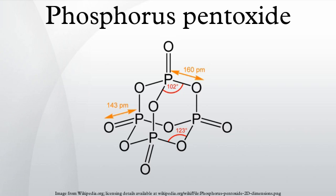Hazards. Phosphorus pentoxide is not flammable. It reacts vigorously with water and water-containing substances like wood or cotton, liberating much heat and may even cause fire. It is corrosive to metal and is very irritating. It may cause severe burns to the eye, skin, mucous membrane, and respiratory tract, even at concentrations as low as 1 mg per m³.